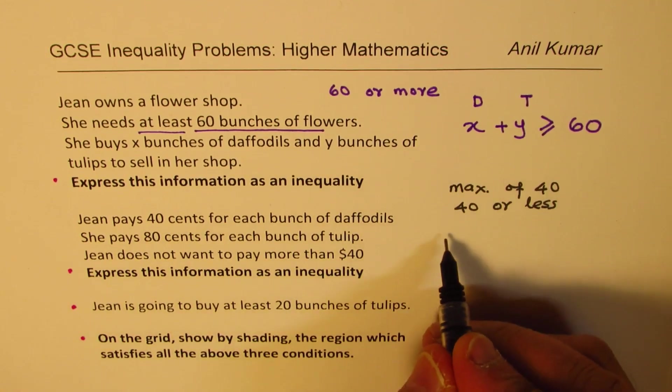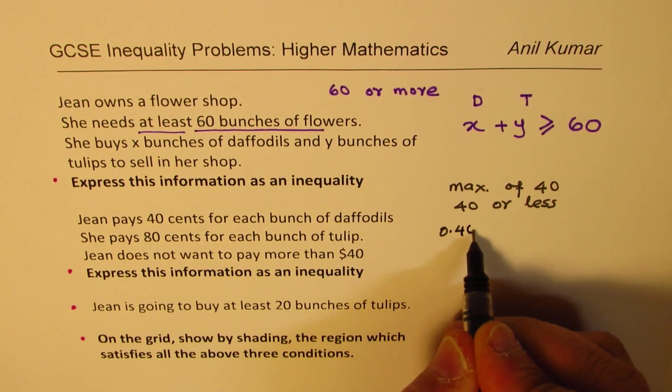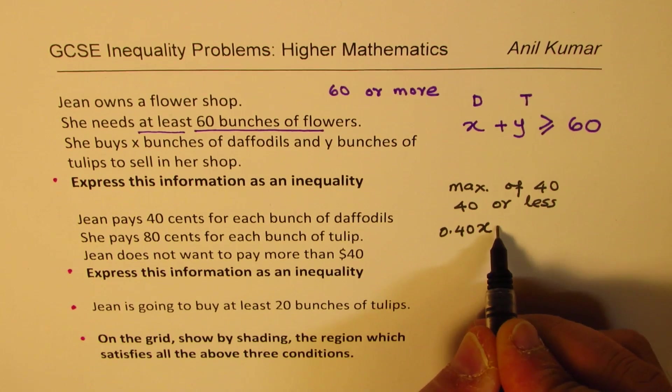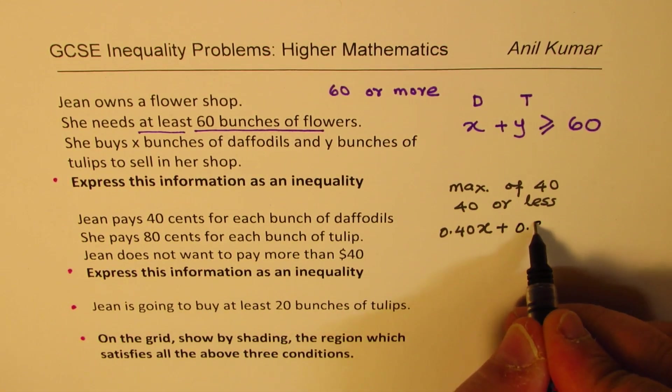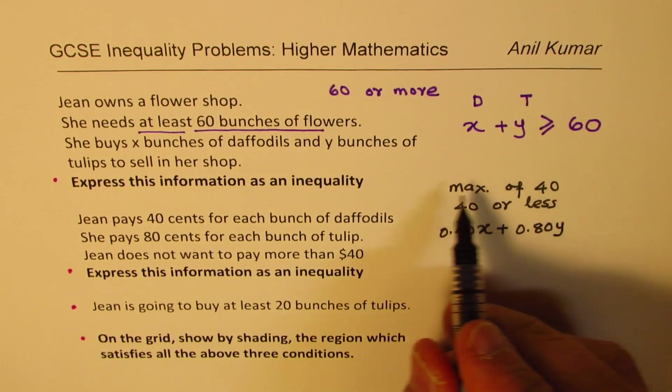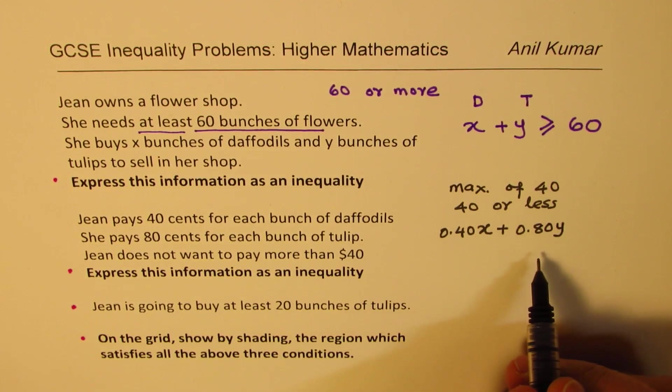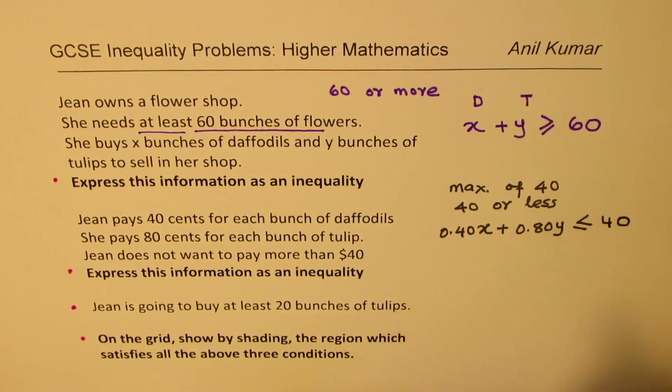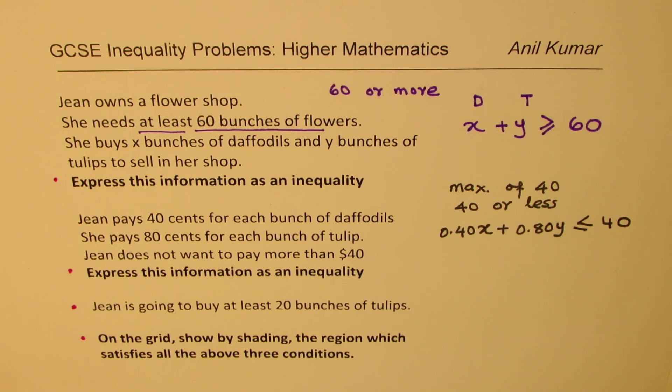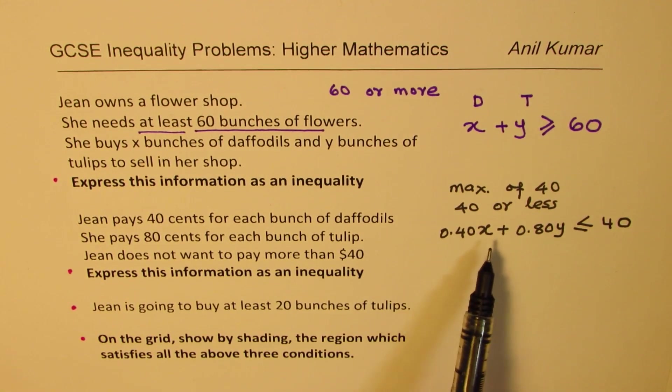Now, 40 cents for each bunch of daffodils. There are X daffodils. So it makes 40 times X cents. Plus 80 cents for each tulip. So 80 cents for each tulip. And total amount should be 40 or less. Less than equal to 40. So that is the way to make inequalities.